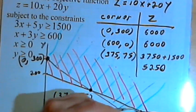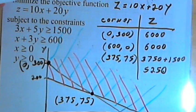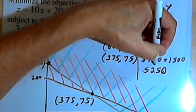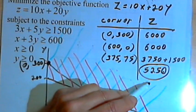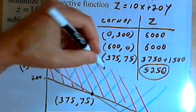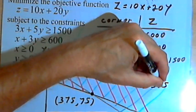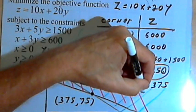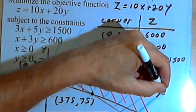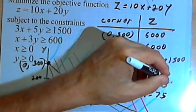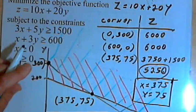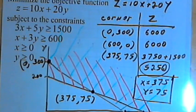So the minimal value I can get for z is going to be 5,250. And it's going to happen when x equals 375 and y equals 75. That's about it. Take care. I'll see you next time.